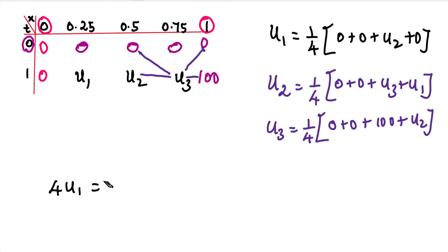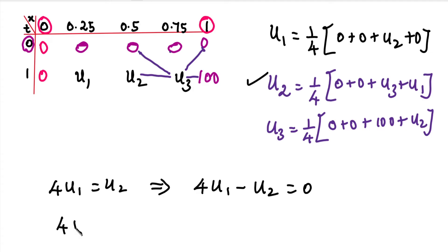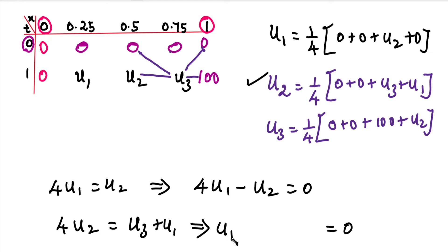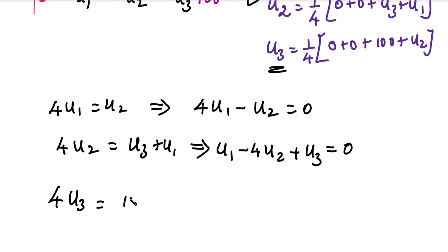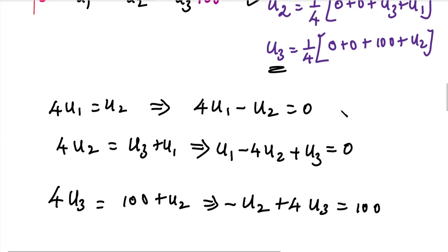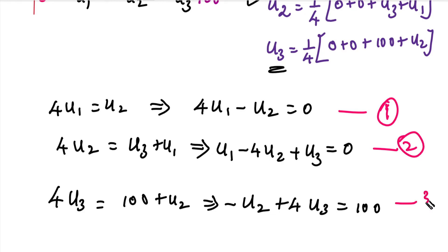Rearranging the three equations by moving unknowns to the left side: Equation 1 is 4u1 − u2 = 0. Equation 2 is −u1 + 4u2 − u3 = 0. Equation 3 is −u2 + 4u3 = 100. Now we solve these three simultaneous equations with three unknowns.